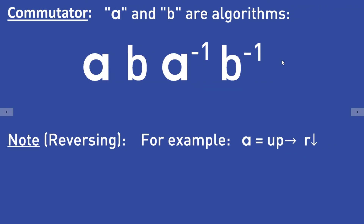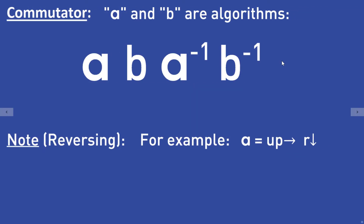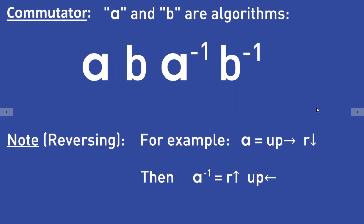By reversing I mean the following: if the algorithm A is 'move the upper layer to the right and then move the right face down,' then the inverse algorithm would be 'move the right face up and then the upper layer to the left.' So you not only reverse the steps of the algorithm, but also invert each move.